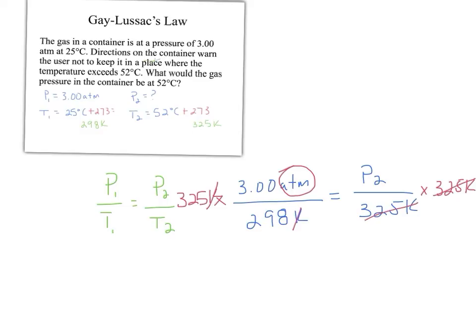When calculating 325 times 3 divided by 298, I find P2 to be equal to 3.27 ATM. That is my final pressure of this problem.